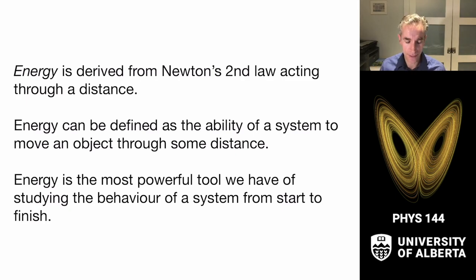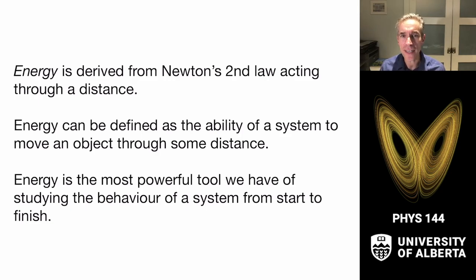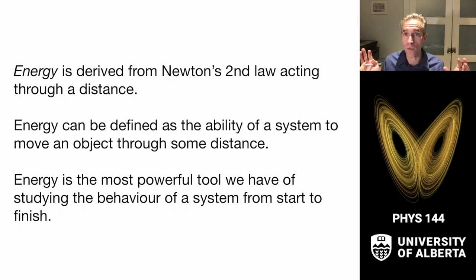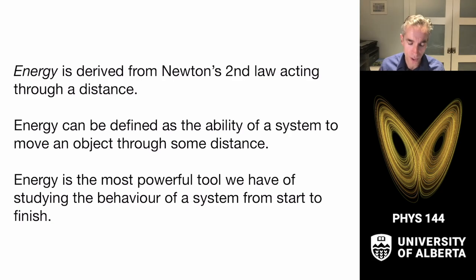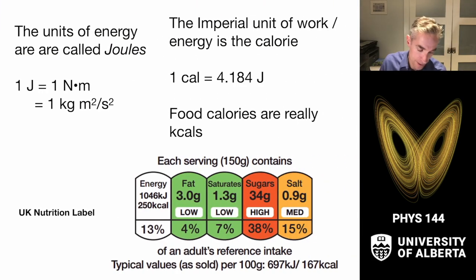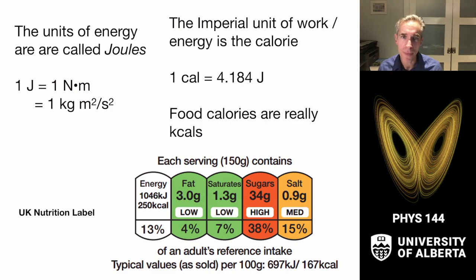The energy of a system is changed by work. Energy is reductively described as the ability of a system to do work — to move an object through some distance. This concept will be one of the most powerful tools in physics, and it derives fundamentally from Newton's second law. The unit of energy is the joule: one newton times one meter, or kg·m²/s².